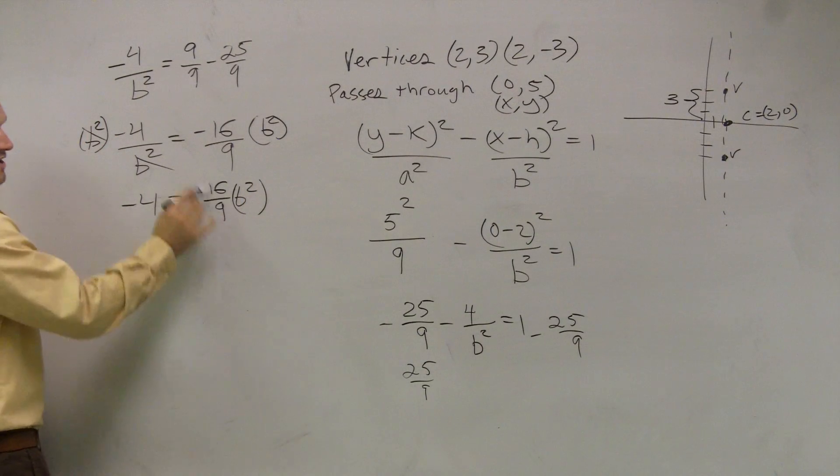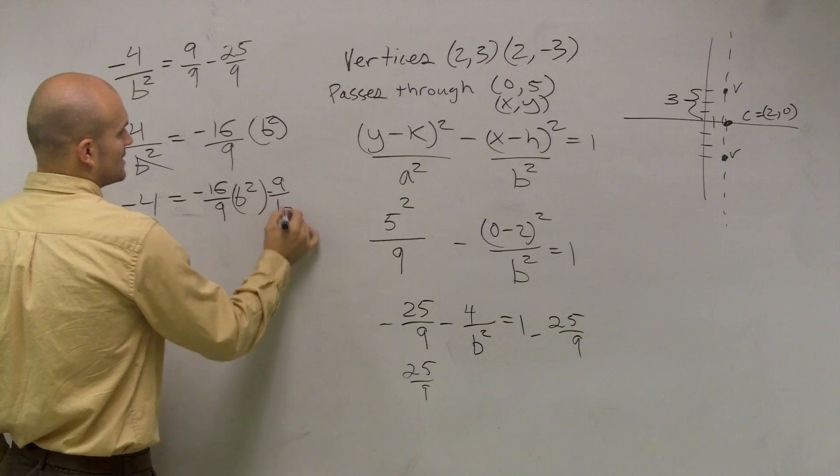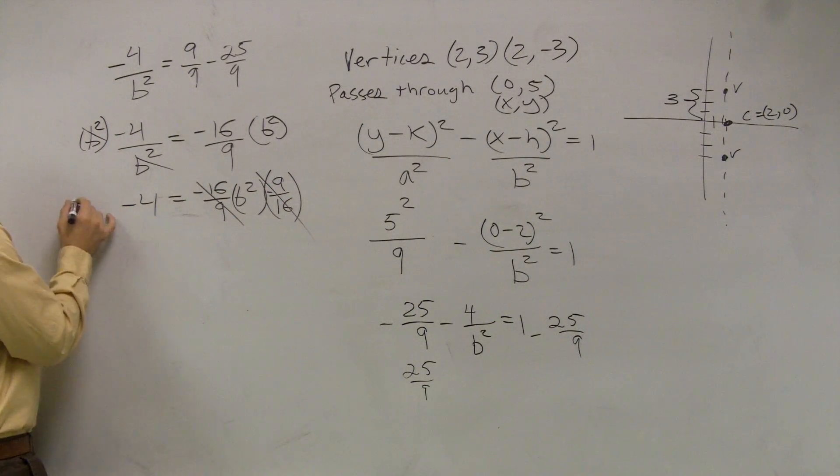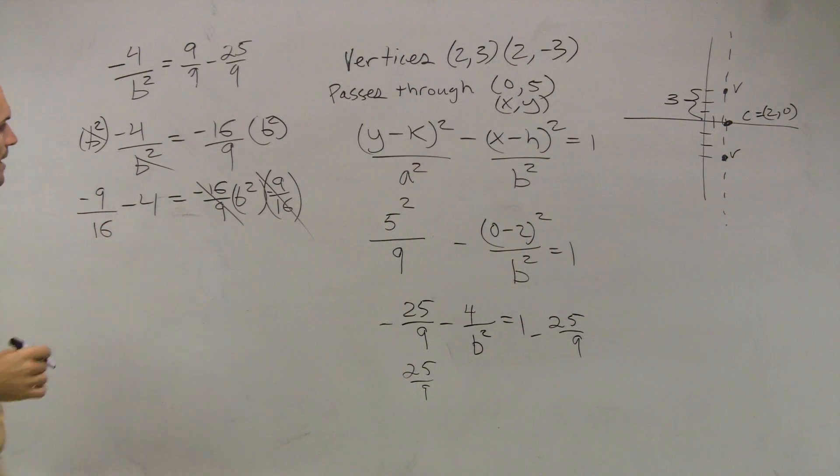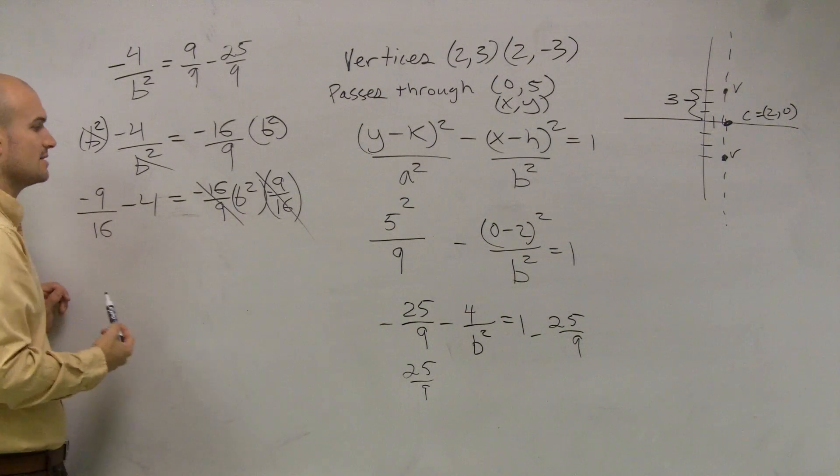Well, if I want to get rid of this fraction, I multiply by the reciprocal, which would be a negative 9 over 16. So now those cancel out. Wouldn't it be 9 over 16? I'm going to multiply by the negative, because I don't want my b squared to be negative. I want the negatives to cancel out.